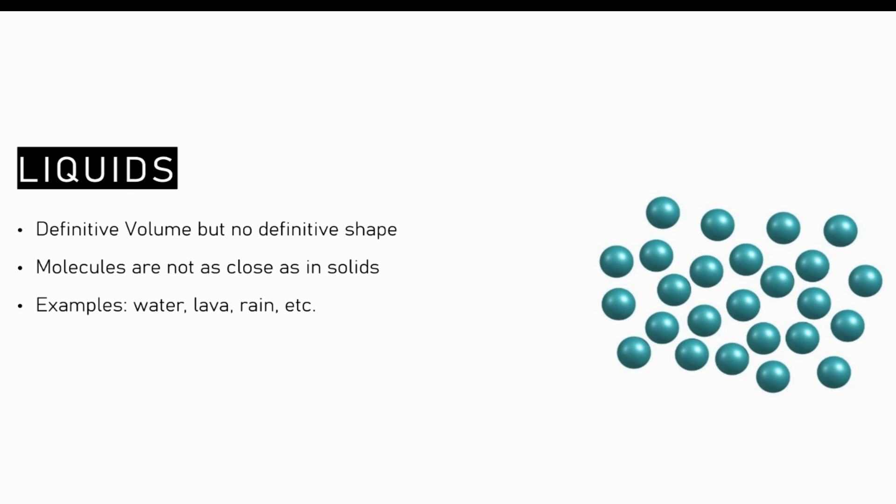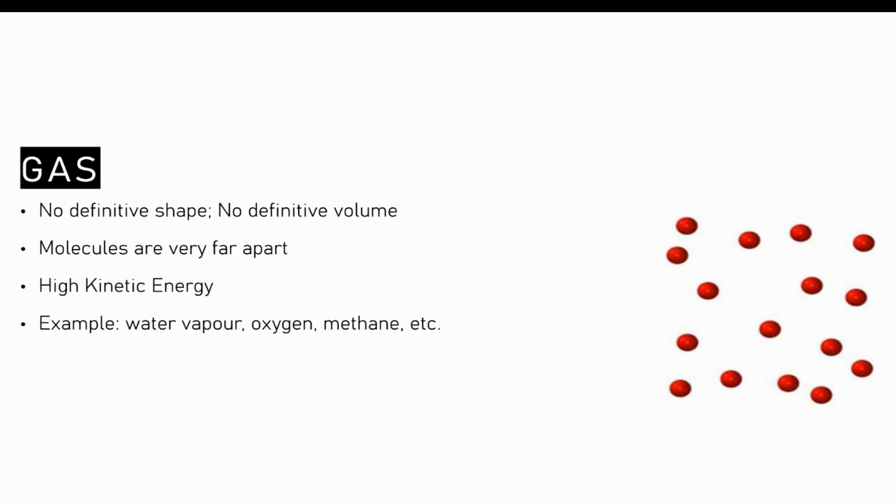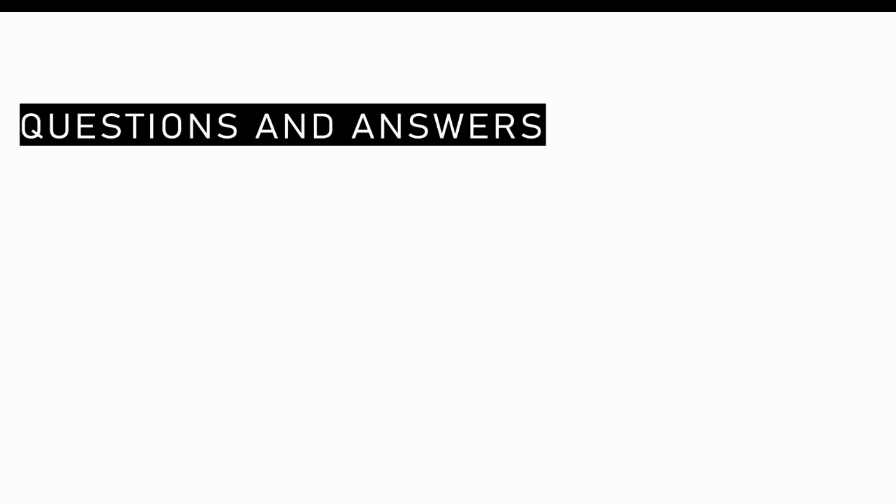Lastly, we have gas. Gas does not have a definite shape nor a definite volume. The molecules in gas are far apart and move more freely than in liquids. They have high kinetic energy due to their molecules having more room to move. Examples of gas include water vapor, oxygen, methane, etc.